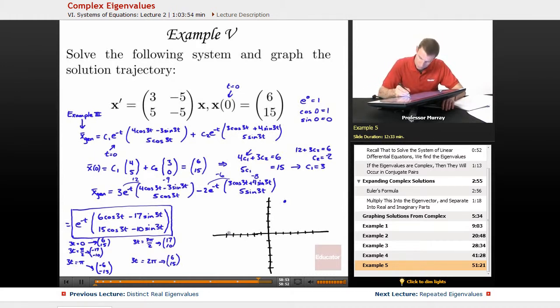Now, negative 17, negative 10. Negative 17 is just short of negative 18, negative 10 is just down from negative 9.